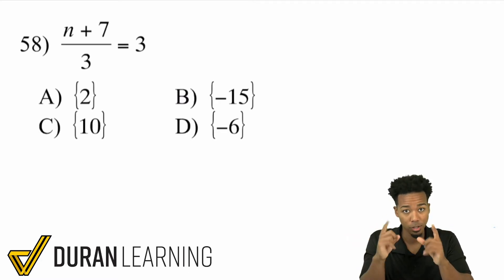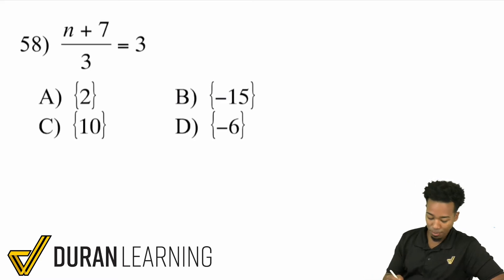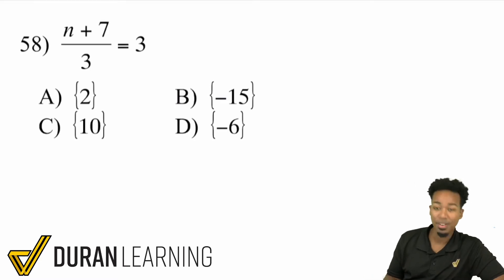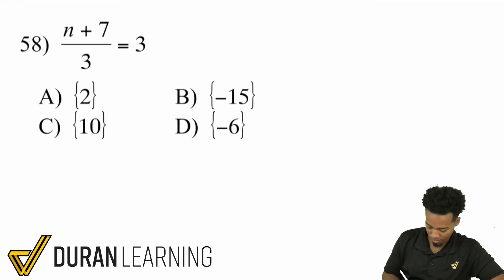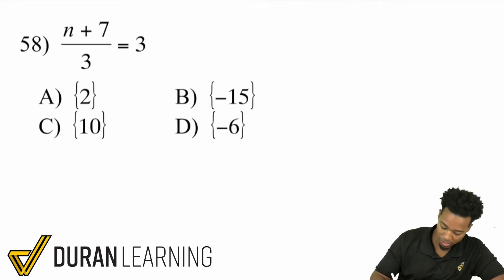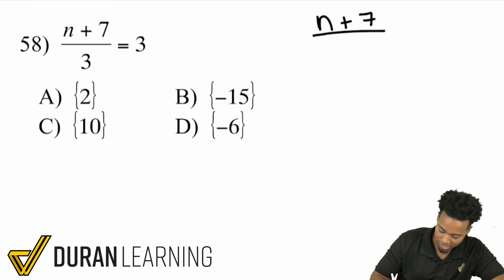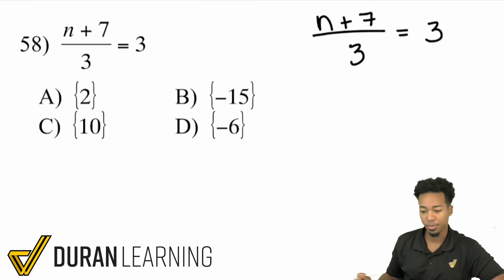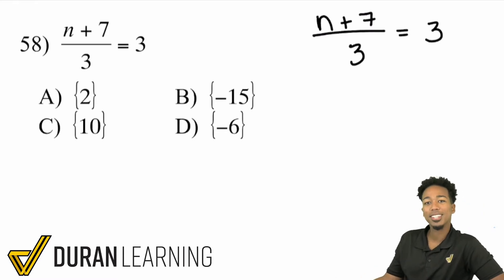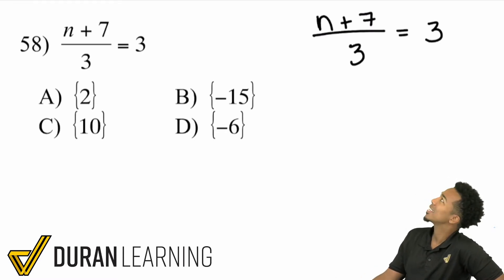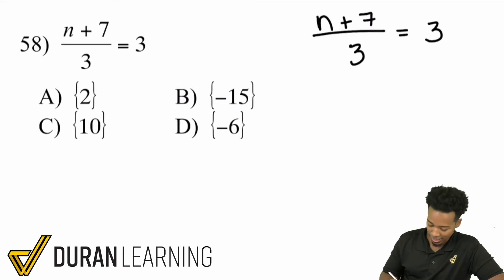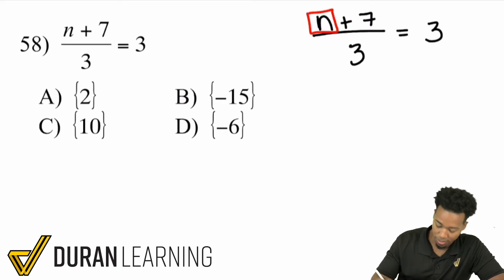Let's go ahead and get this done. We have n plus 7 divided by 3 equals 3. So n plus 7 over 3 equals 3. My goal is to solve for n — I'm trying to get n by itself.